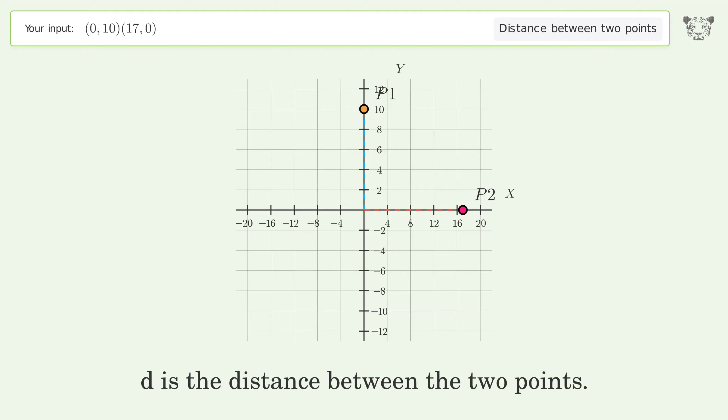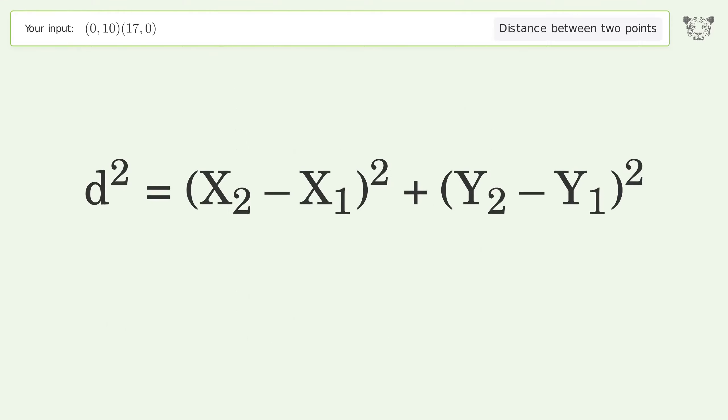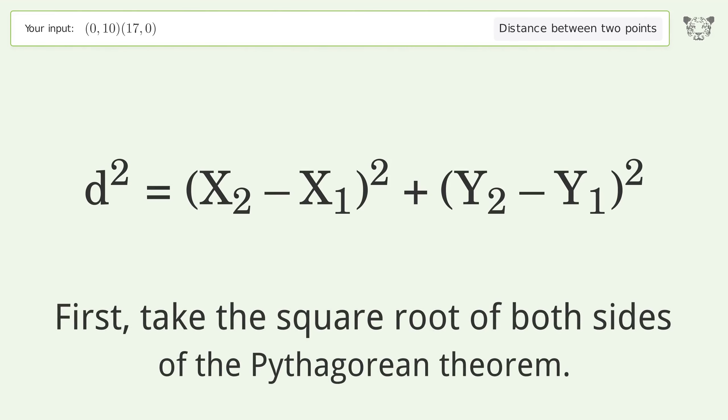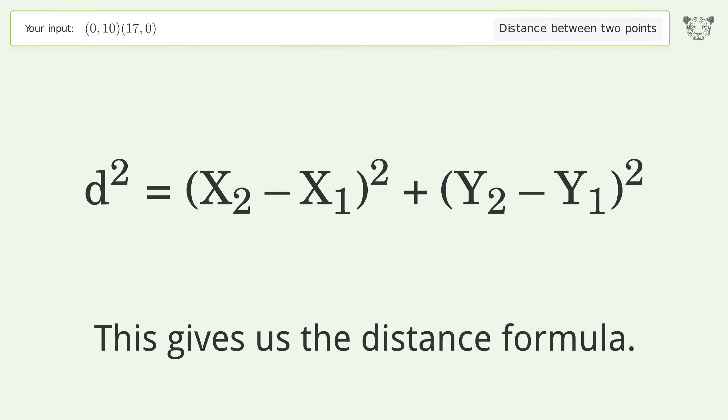d is the distance between the two points. First, take the square root of both sides of the Pythagorean theorem. This gives us the distance formula.